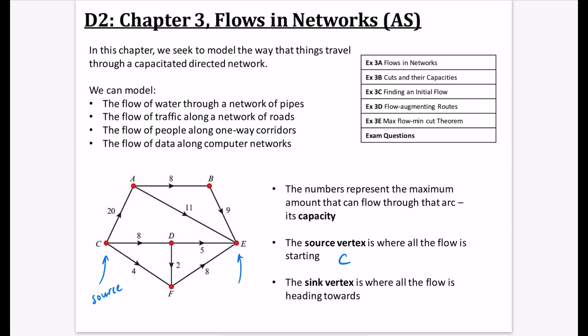The sink vertex is where all the flow is heading towards. In this case, E is the sink because all flow is going towards it. When we get to chapter 4, we'll see where you might have two sinks or two sources and learn how to deal with that. But in Flows in Networks 1, which is the AS section, we will only ever have one sink and one source.